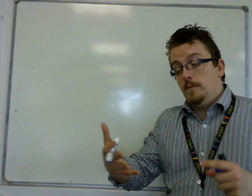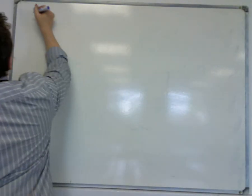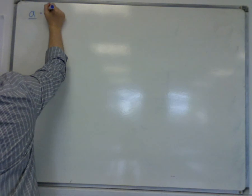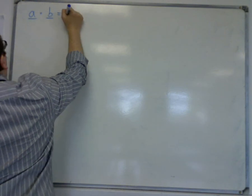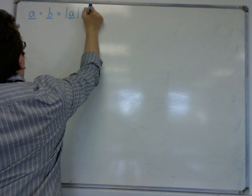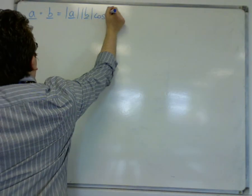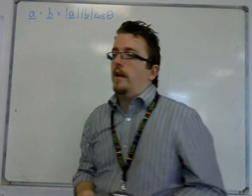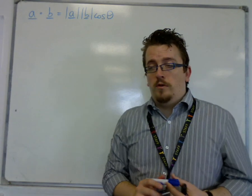So the scalar product from the previous video was written as a dot b equals mod a mod b cos theta. This is the scalar product.